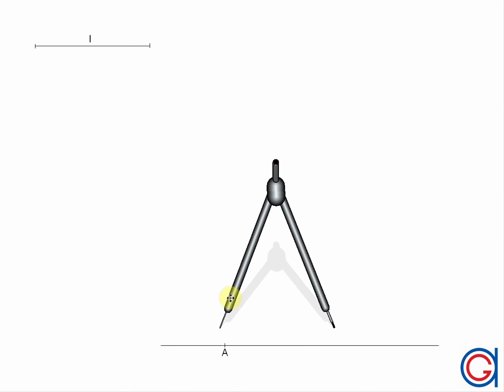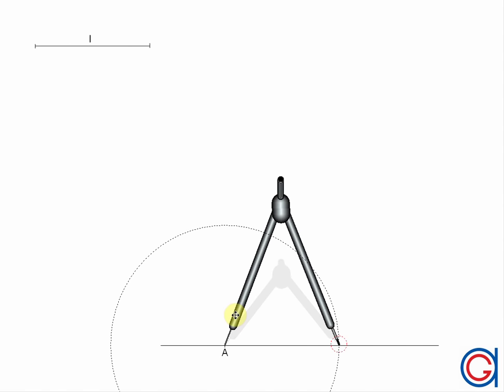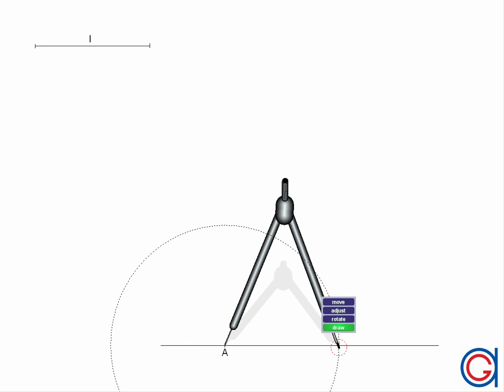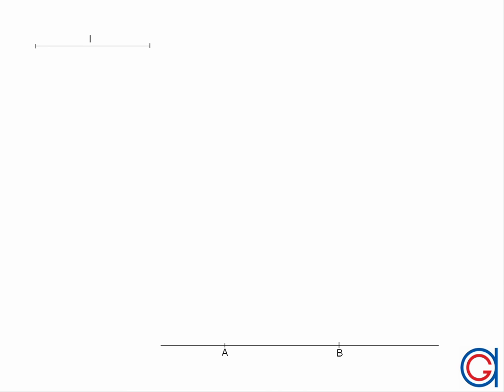Now we are going to transport the given length L on the top of our screen onto our previously drawn horizontal line. With our compass set on point A we scribe this length and where it cuts the line we will call this point B as can be seen here in the video.